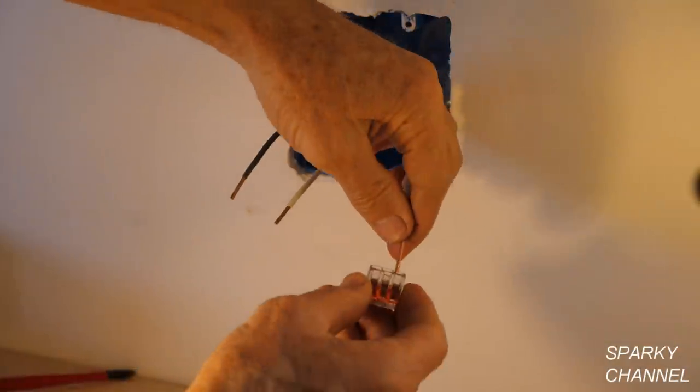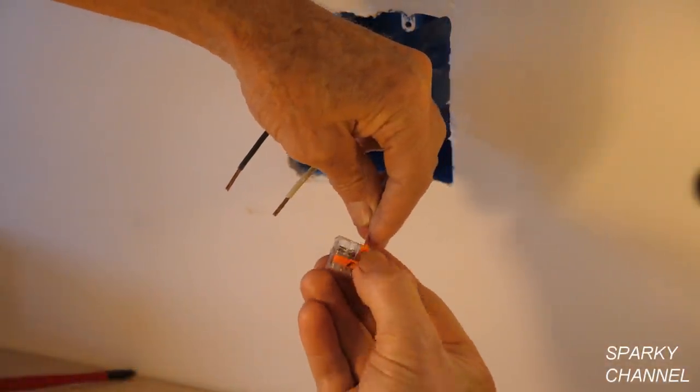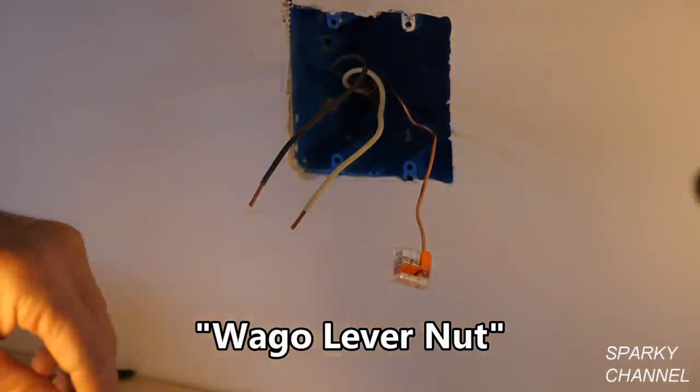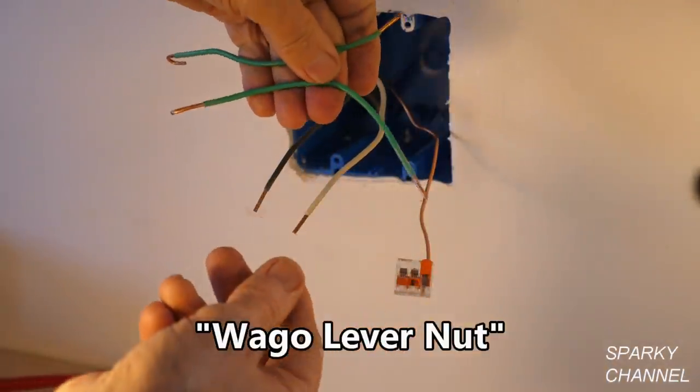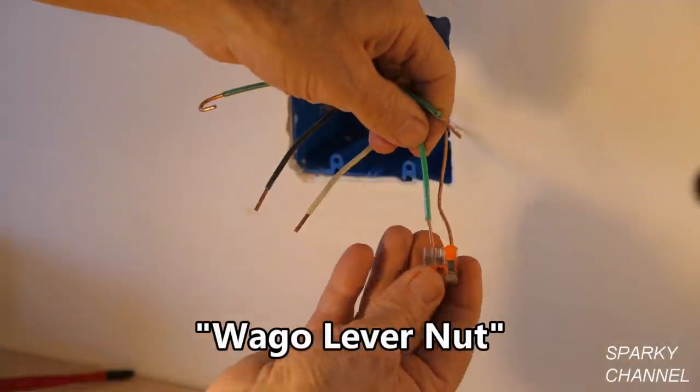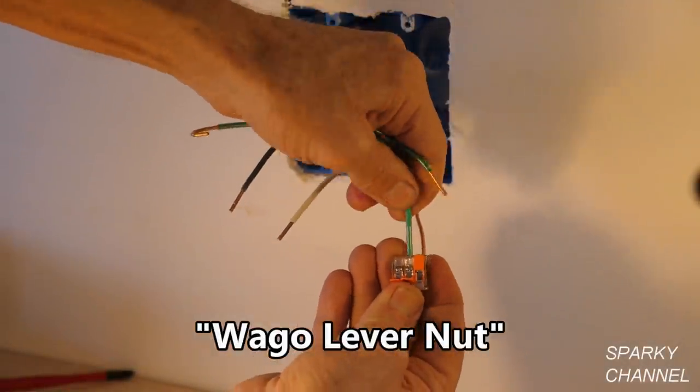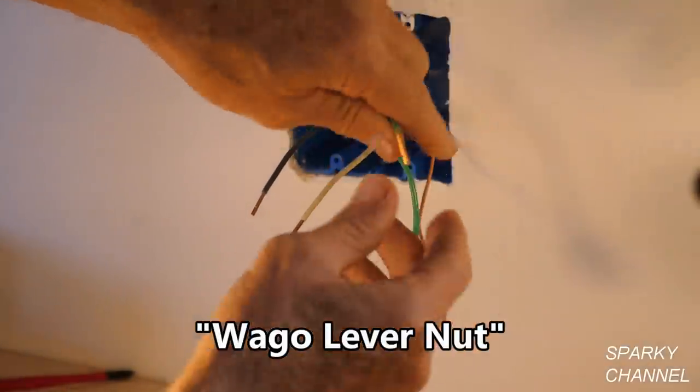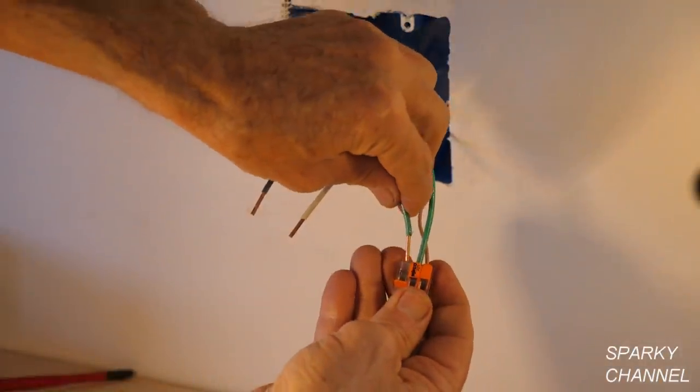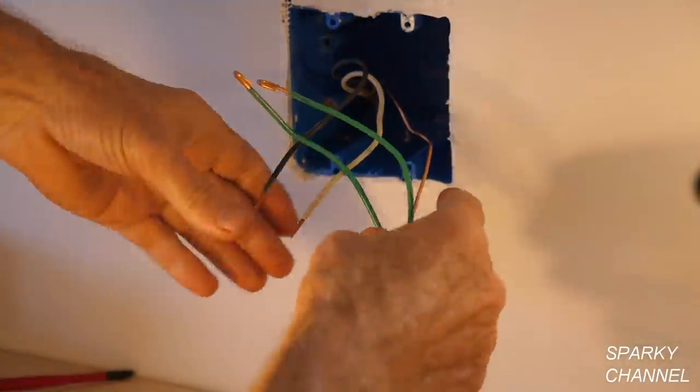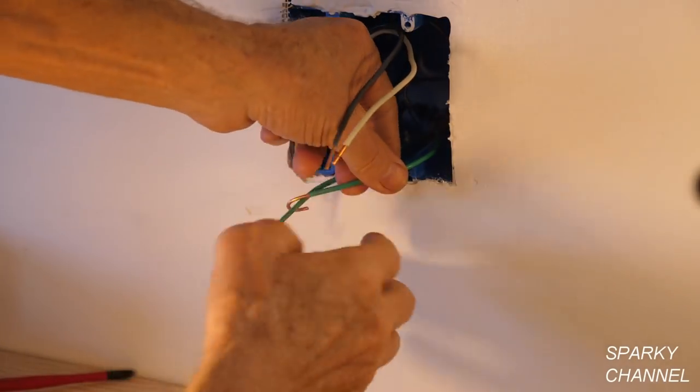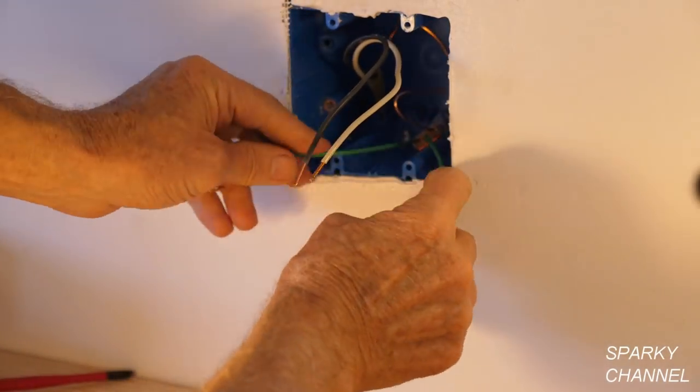So the first thing we're going to do is hook up the grounds. I'm going to put a three-connector Wago lever nut on the ground. So I've prepared two pigtails, one for each of the outlets. We'll put this in there all the way, click it down, put this one in there all the way, click it down, push that into the back of the box, and we've got two pigtails ready, one for each of the outlets.